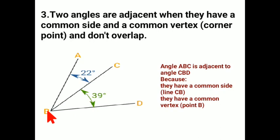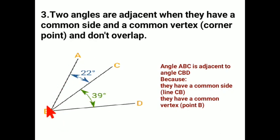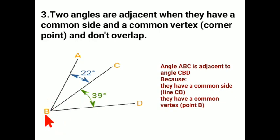Another important condition: if any of these points is missing, we will not consider that as an adjacent angle. There are two conditions to remember. Number one: they should have a common side. Number two: they have a common vertex point — the corner point where they are meeting. Point B is where every line is meeting — A meets at point B, C meets at B, and D also meets at point B. So the corner point, which we refer to as the vertex, is the common vertex. In angle ABC and angle CBD, they have a common side that is CB, and they have a common vertex that is B.